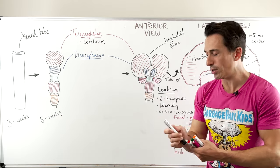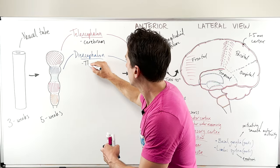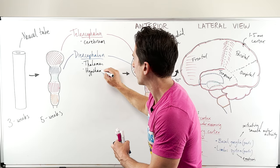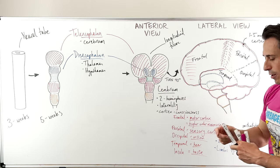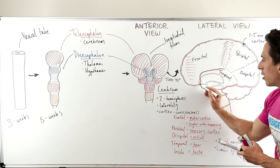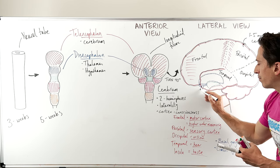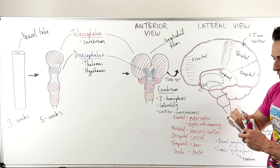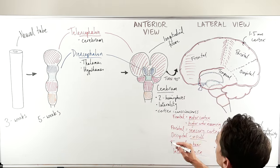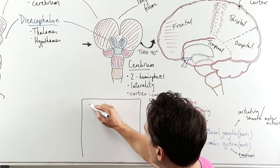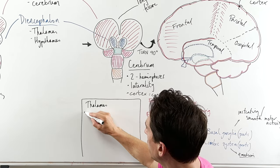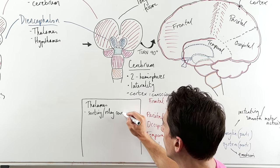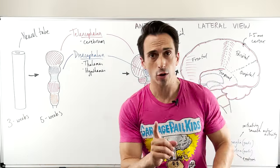The diencephalon has two really important structures: the thalamus and the hypothalamus. Most of that area is the thalamus, and the hypothalamus is sitting below it with a protrusion called the pituitary gland. The thalamus is the sorting center or relay center — it's the post office of the brain. It takes information and decides where it needs to go.